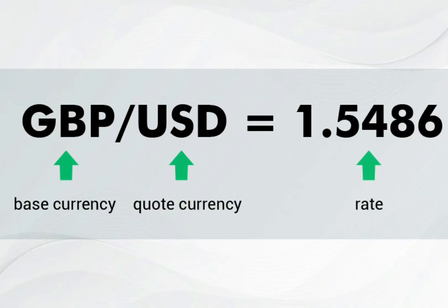For example, you see the quote on your screen, which is GBP against the USD, where the GBP is the base currency and the USD is the quote currency, and the rate is 1.5486. So it just means that to get one pound, you need $1.5486.